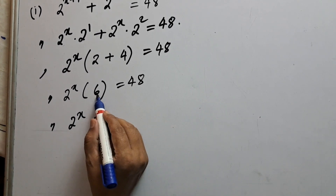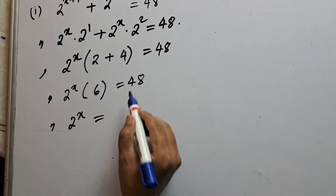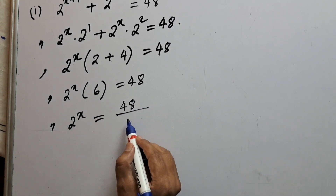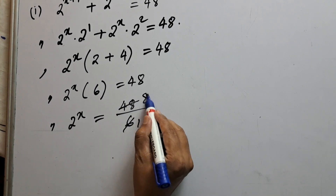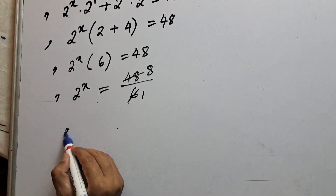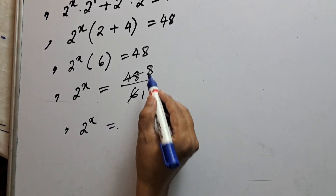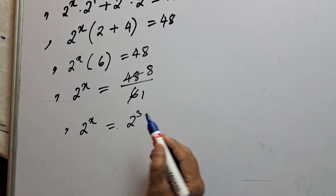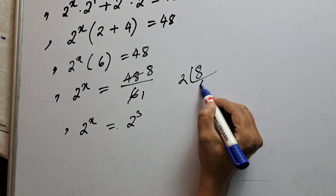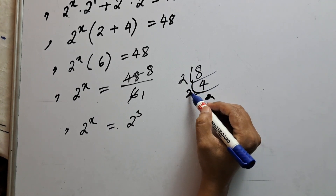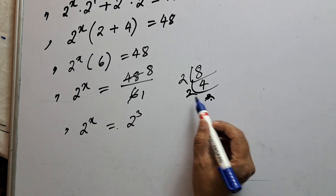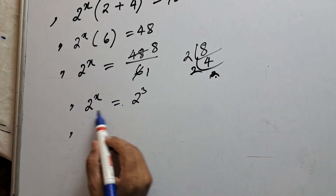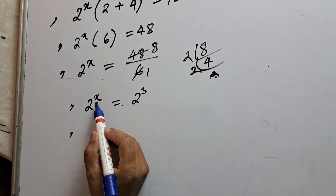Or 2 to the power x equals 48 divided by 6. By cross multiplication, 6 goes to the denominator of 48 — and 6 eights are 48 — so 2 to the power x equals 8. Now 8 means 2 cubed: 2 multiplied three times gives us 8. So 2 to the power x equals 2 to the power 3.